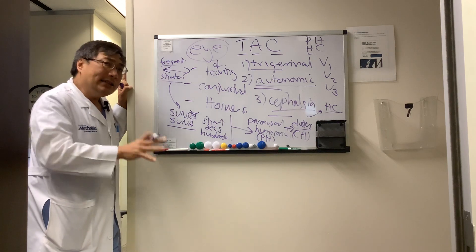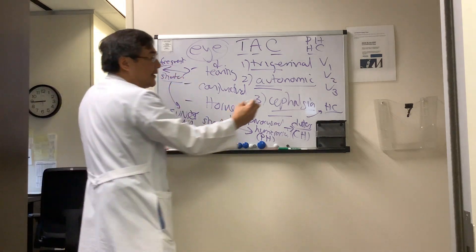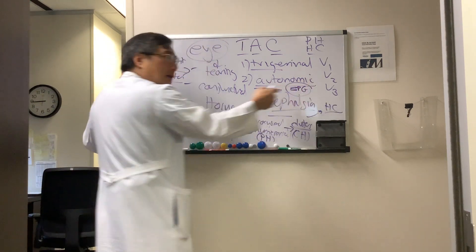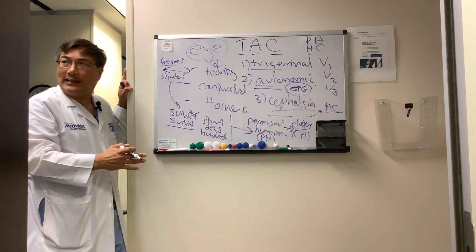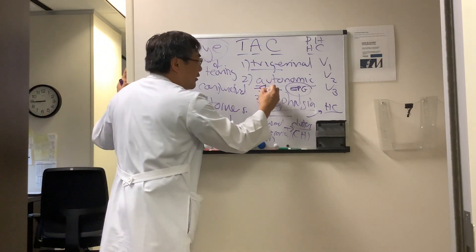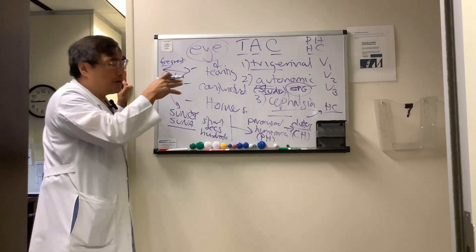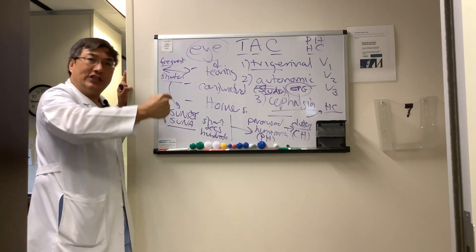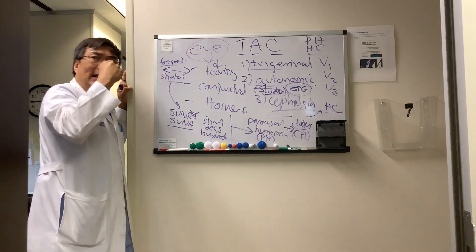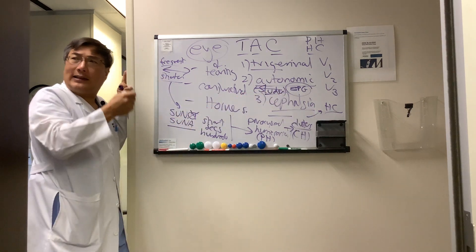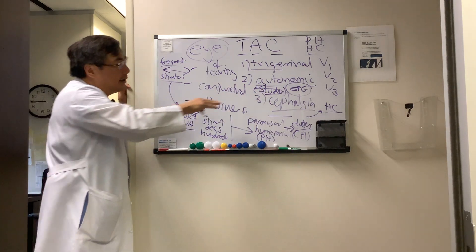In the past, the eponym Sluder neuralgia was used to refer to the TAC that affects the greater superficial petrosal nerve and its input at the level of the sphenopalatine ganglion within the pterygopalatine fossa — the eponym Sluder, from 1908. The reason that's important is you can reach the sphenopalatine ganglion in the pterygopalatine fossa with a block — either with lidocaine or just a cotton tip with lidocaine — and block the autonomic dysfunction at that level.